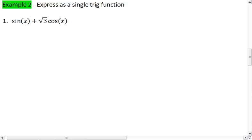All right. We have sine of x plus root 3 cosine x. And so we have sine and cosine of the same angle. Our coefficients are an implied 1 and root 3. So here A equals 1, B equals root 3.